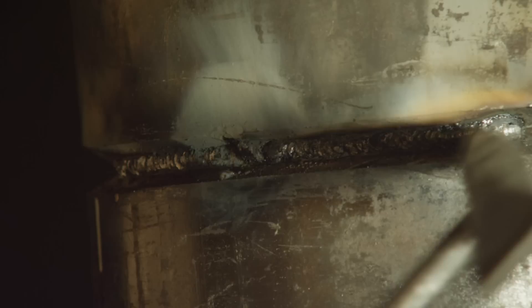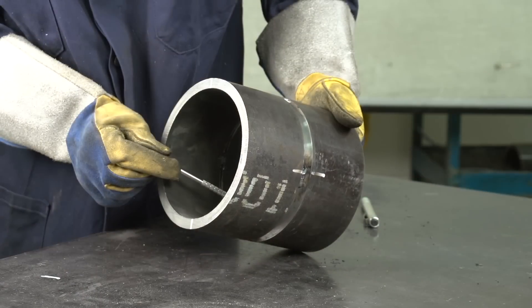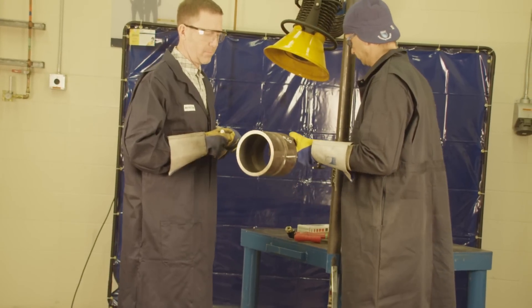After completing the root pass, remove the slag and have it inspected by the safety code's officer. After the 2G root has successfully passed inspection, the coupons can be placed in the 5G position and tacked to the positioner arm.